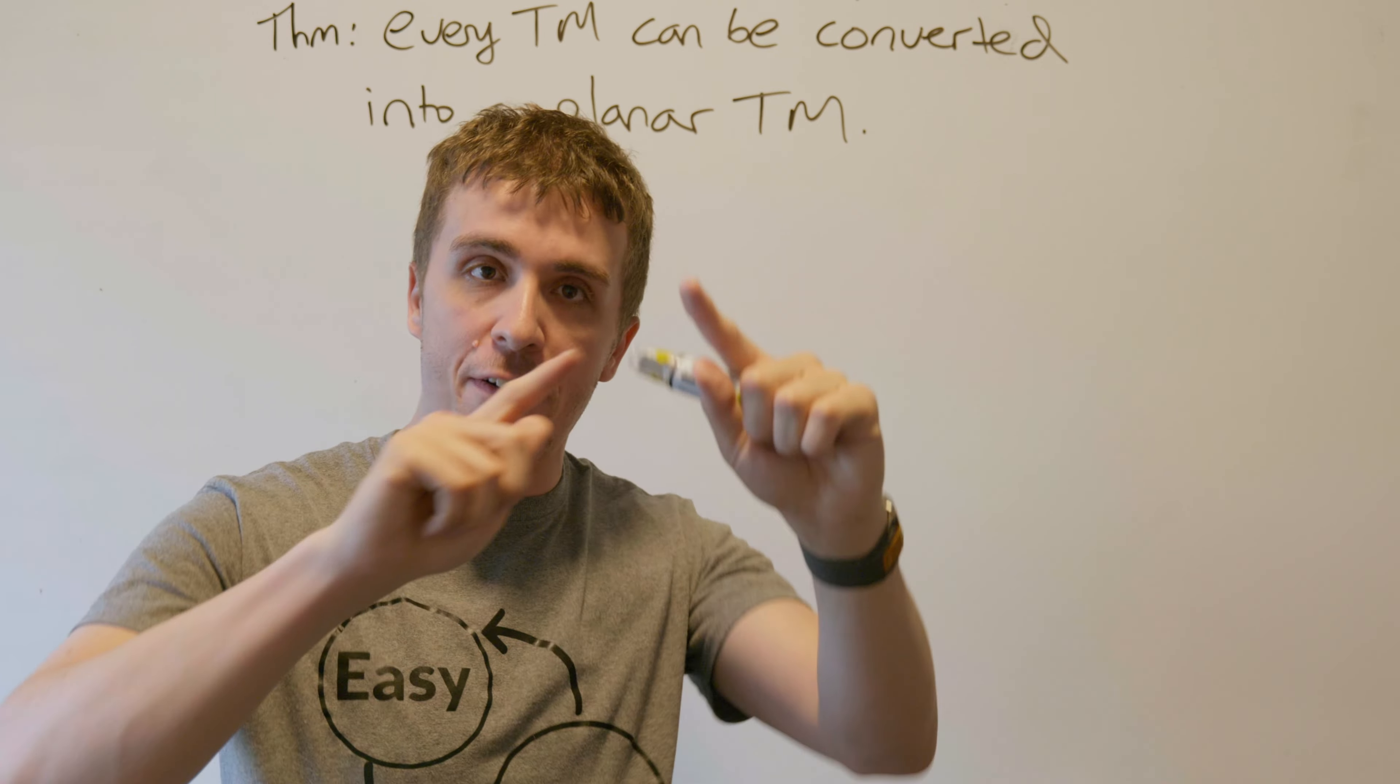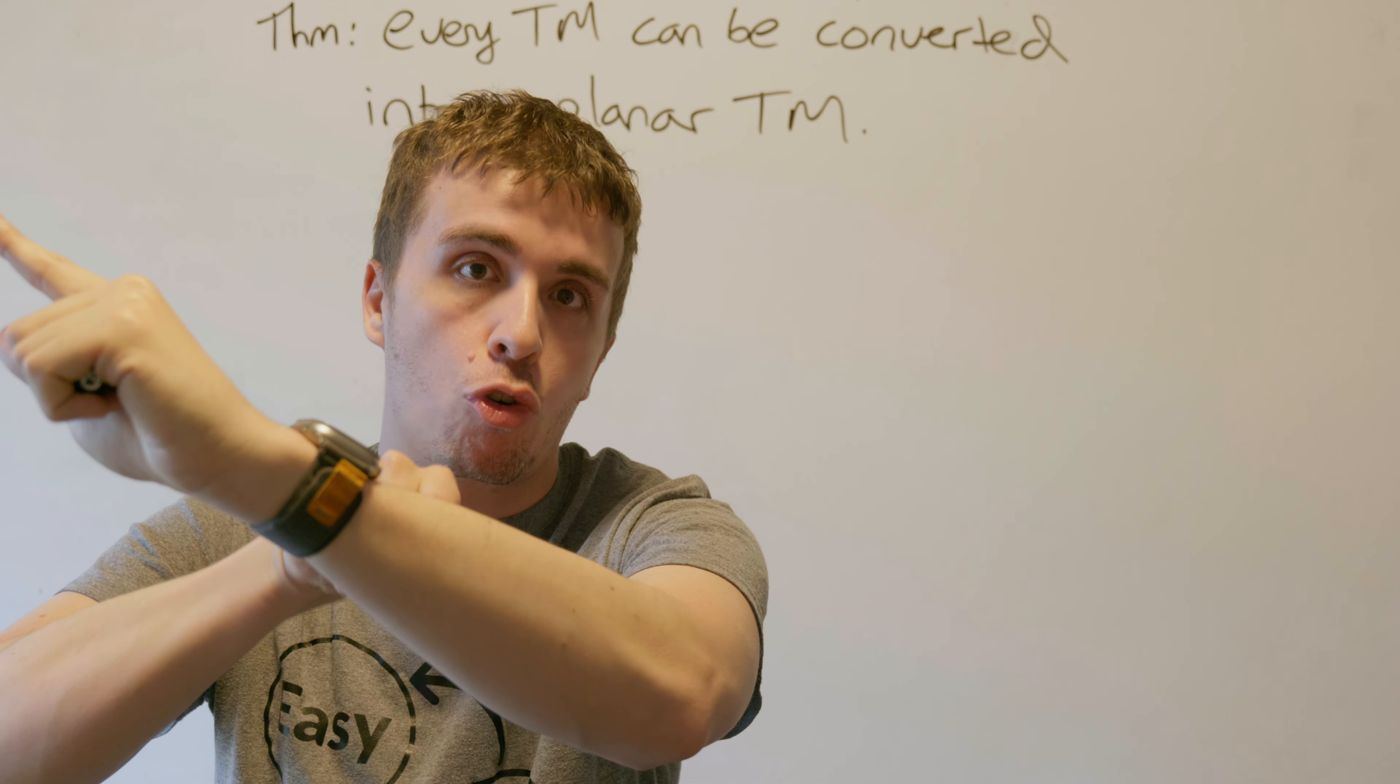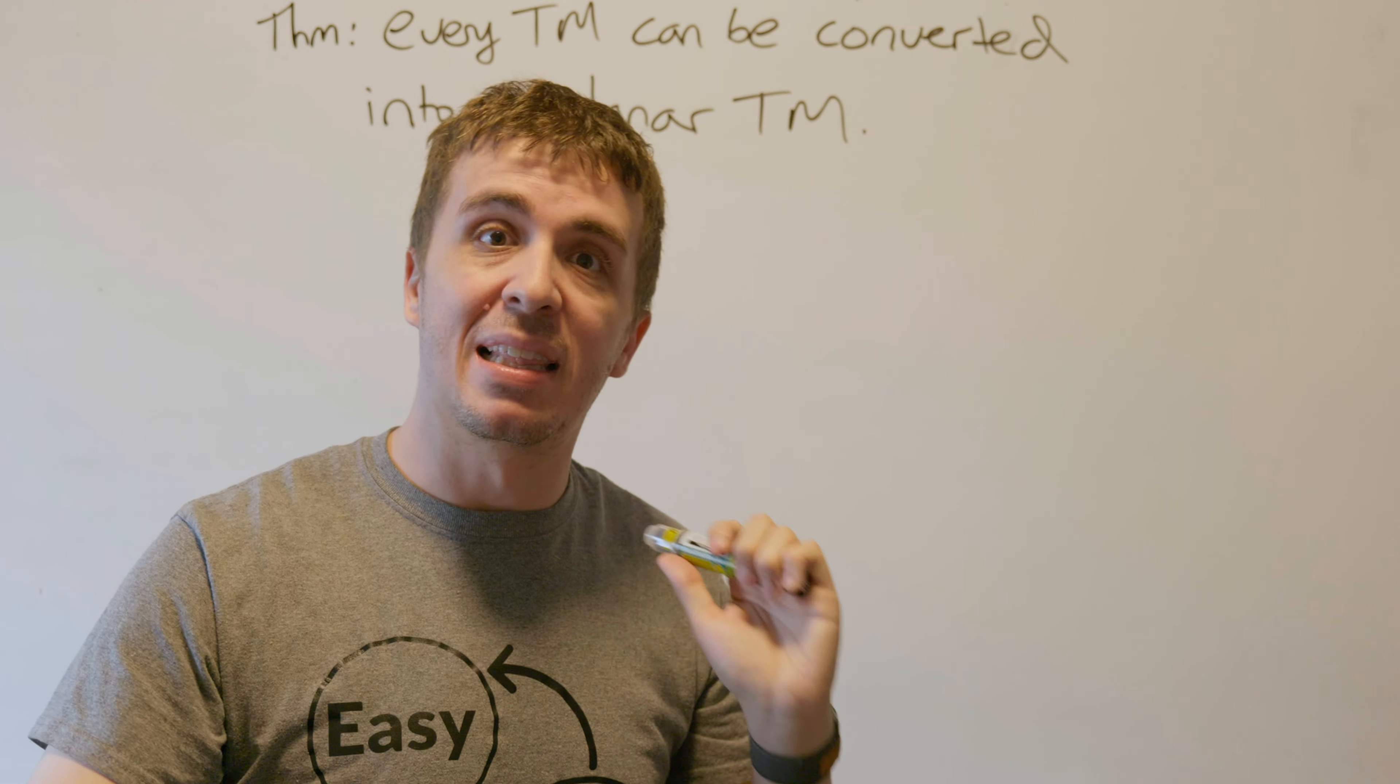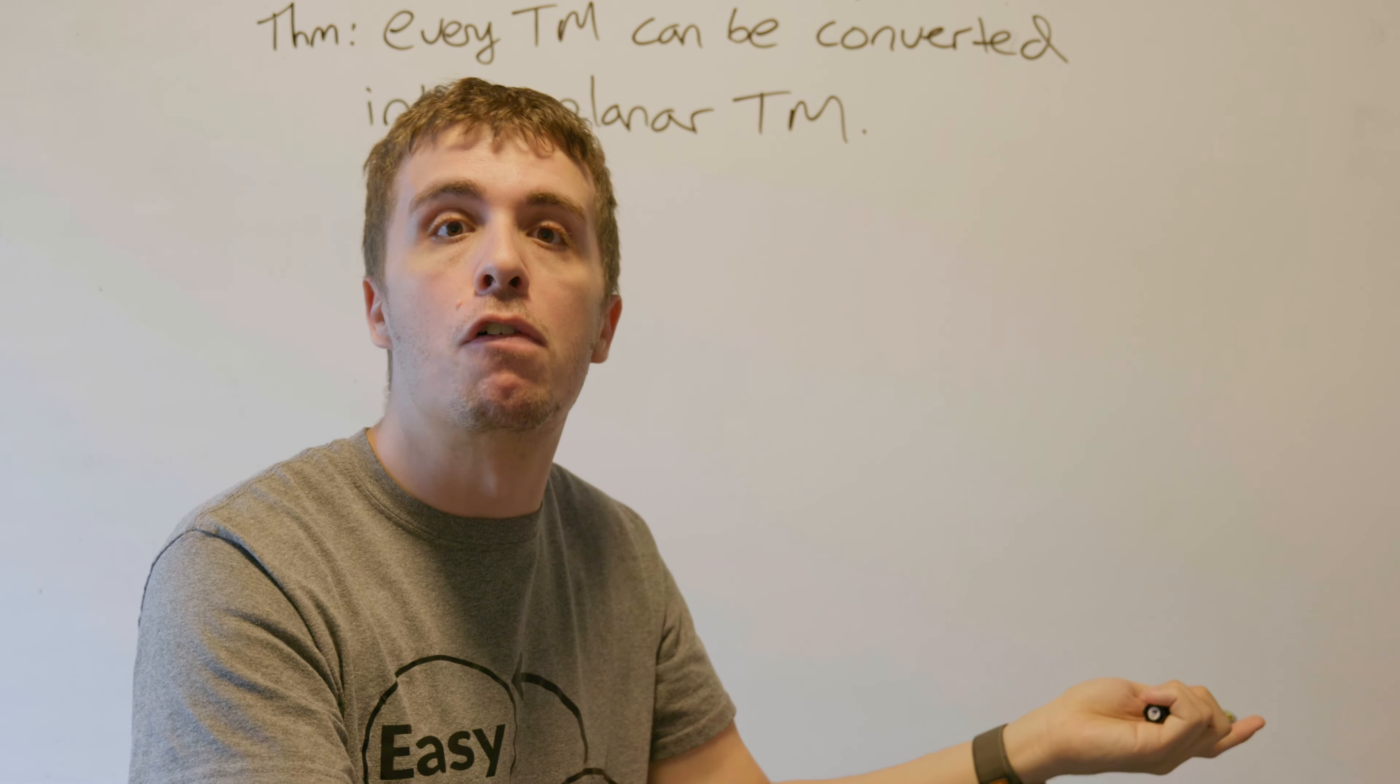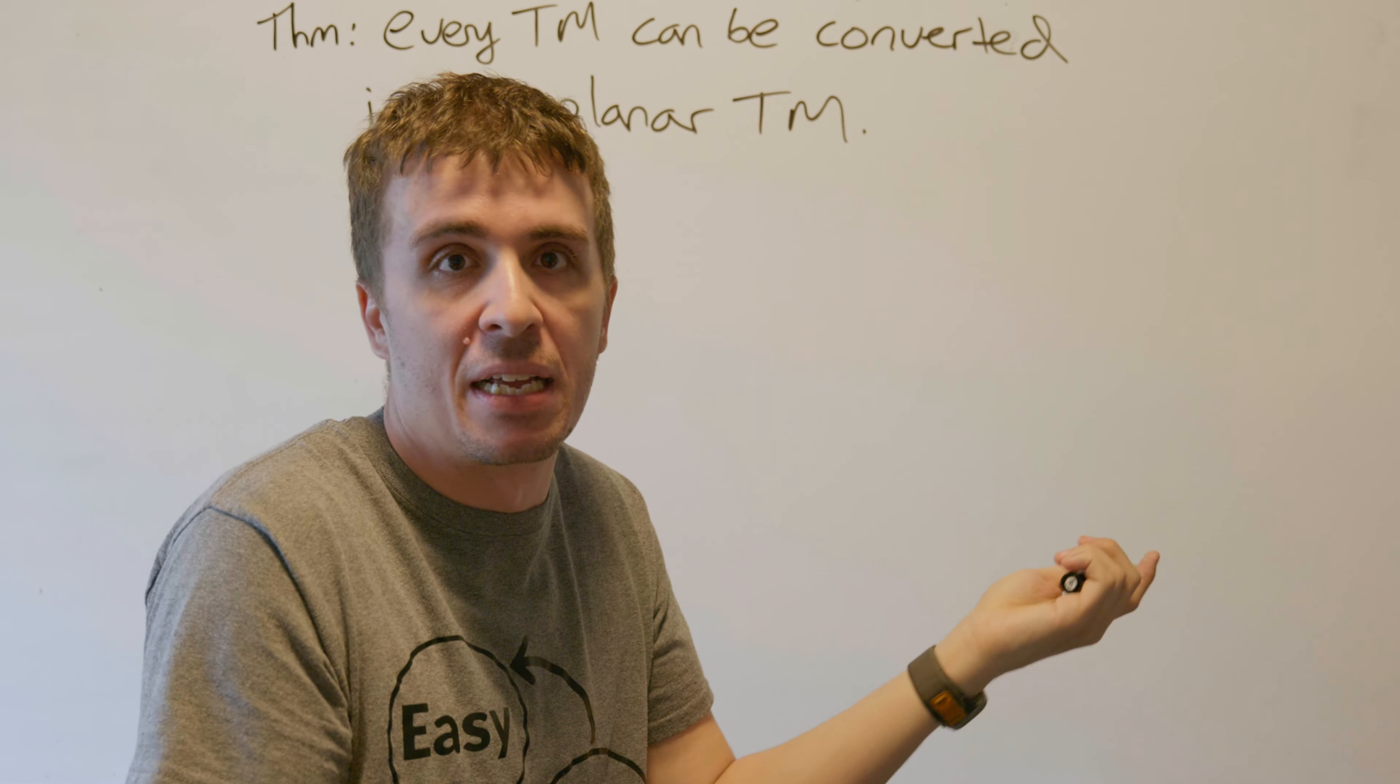The idea is that for every pair of edge crossings, we're going to add a state at the crossing, and actually other states too, and that will eliminate the edge crossing. Since there's only a finite number of edge crossings, we can just repeatedly do this over and over until we have exhausted all the edge crossings.